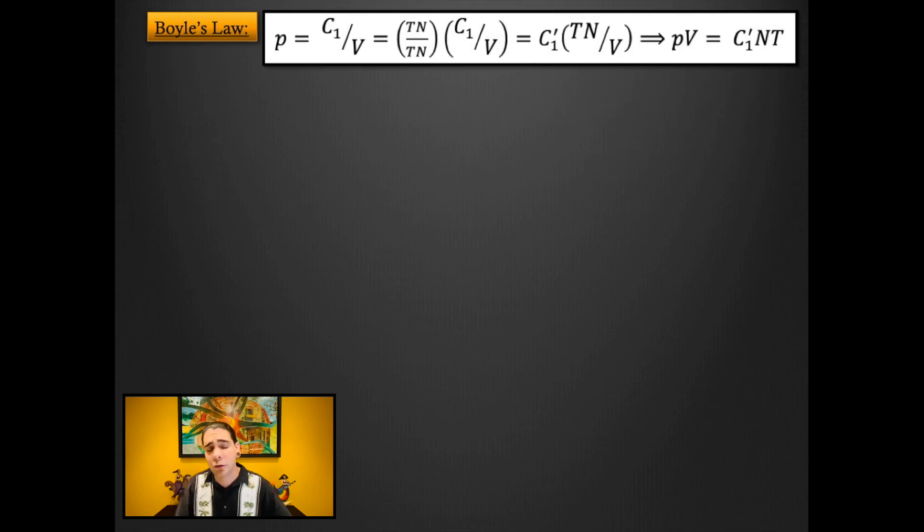Now this is where things get a little bit tricky, but just bear with me. For example, Boyle's law we said that pressure is equal to C1 divided by V, where C1 is some number that we don't know, and we assume that the temperature T and the number of molecules N were constant. So if we multiply it by TN divided by TN, that's just equal to 1 and we're perfectly allowed to do that. Anything times 1 is just itself, and for the TN in the numerator we're going to pull that out and keep that in our equation.